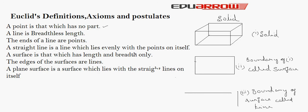Next, the ends of a line are points. A straight line is a line which lies evenly with the points on itself — meaning if it is a straight line, it lies evenly with all points on itself.